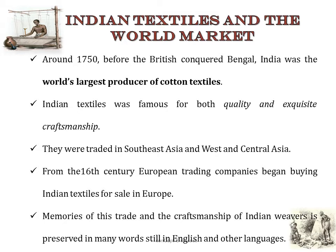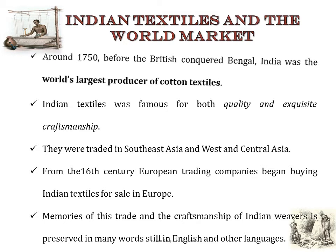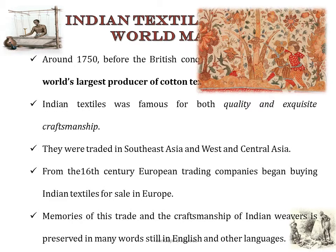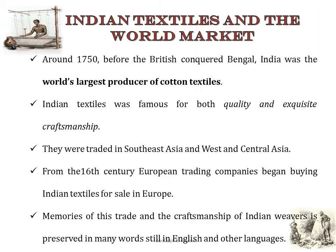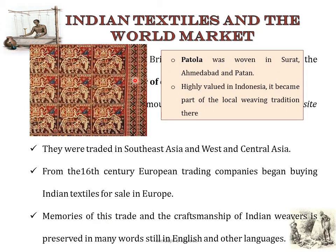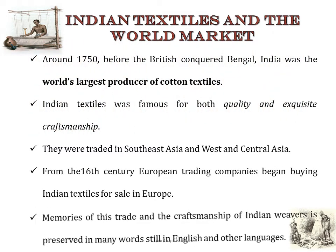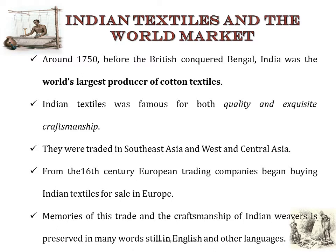Before the British came to India around 1750, India was the world's largest producer of cotton textiles. Indian textiles were famous for both their quality and their exquisite craftsmanship, and hence they were traded in Southeast Asia, West and Central Asia. From the 16th century, European trading companies began buying Indian textiles for sale in Europe. For example, the Patola weave, woven in Surat, Ahmedabad and Patan, was a highly valuable cloth in Indonesia and became part of the local weaving tradition there. Memories of this trade are preserved in many English words we still use today.